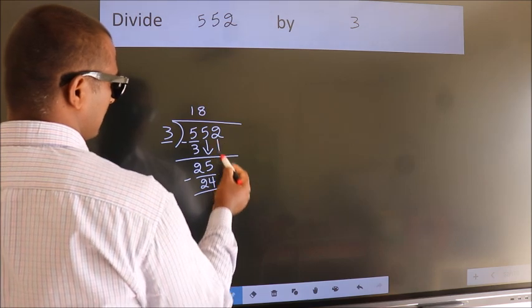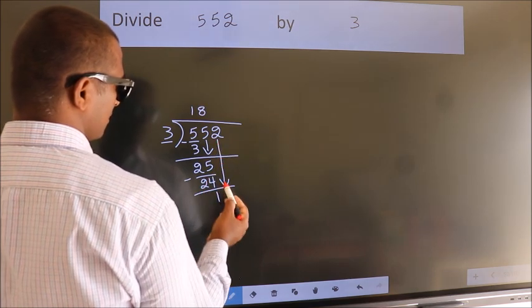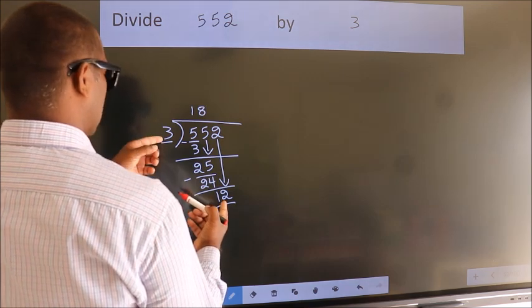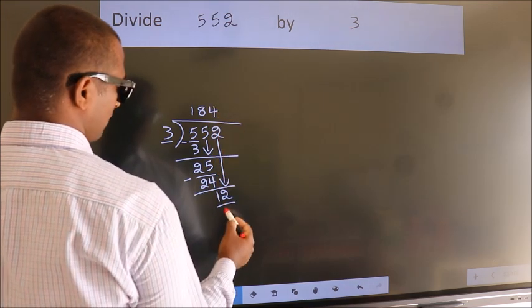After this, bring down the beside number. So, 2 down. So, 12. When do we get 12? In 3 table, 3 4s 12.